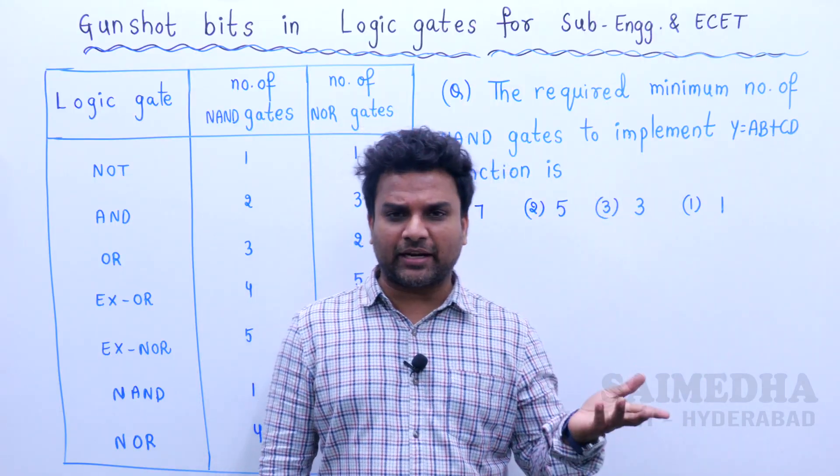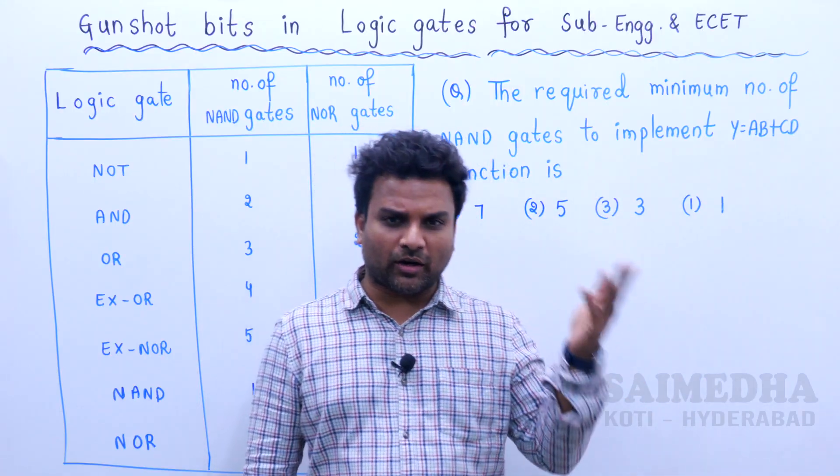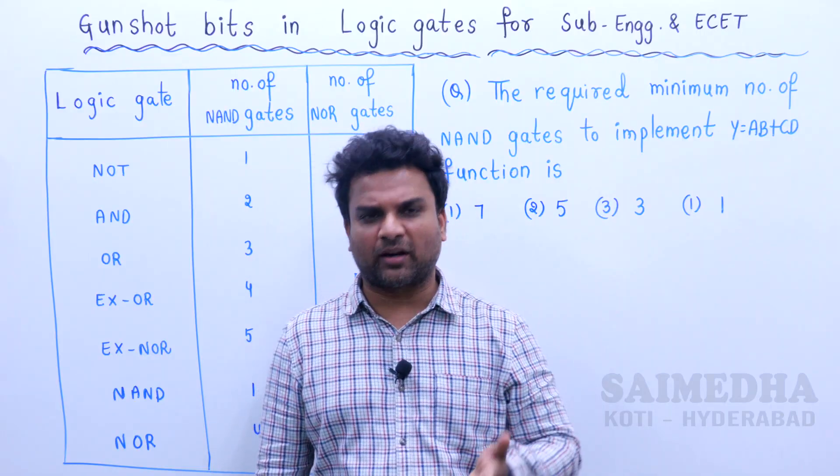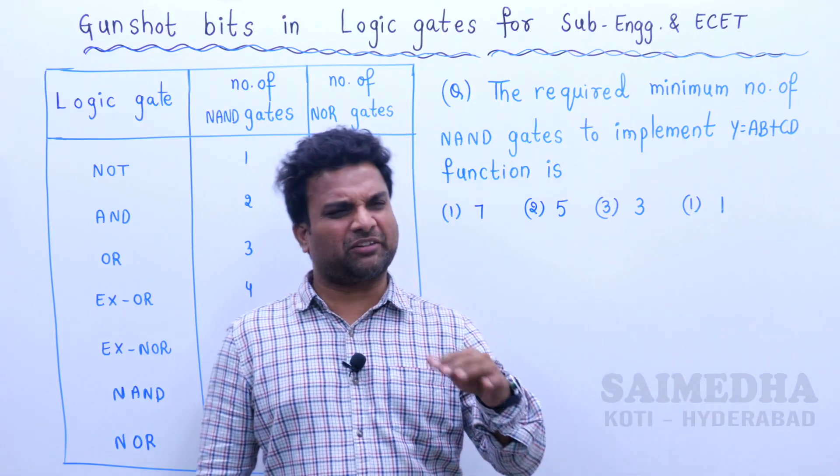That is NAND gate: AB whole bar. NOR gate: A plus B whole bar. XOR gate, XNOR gate.